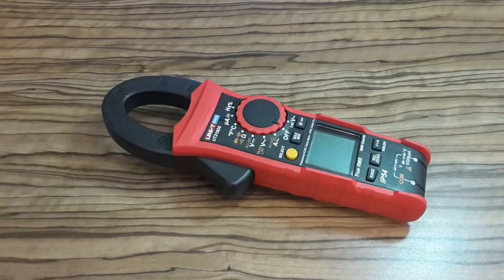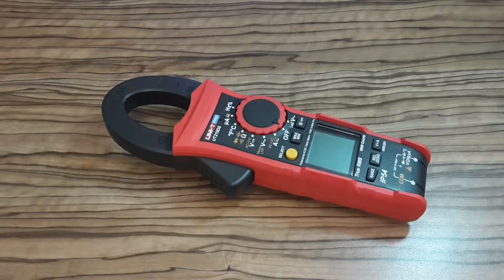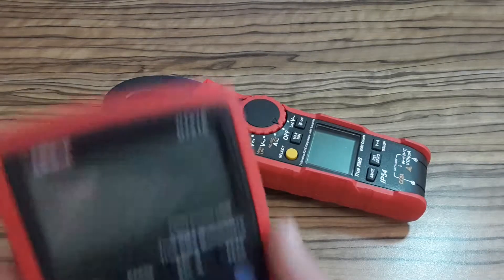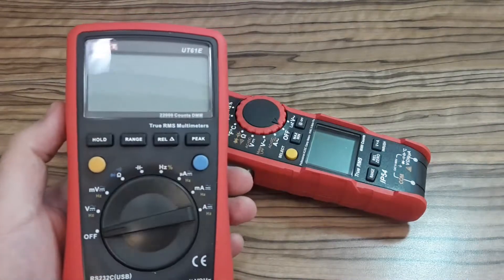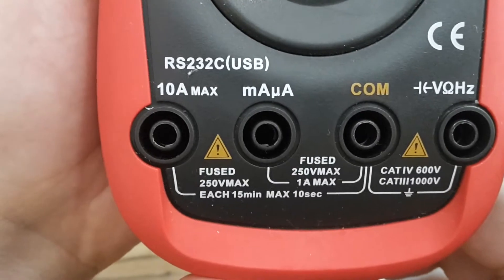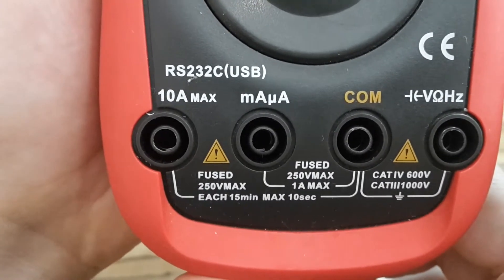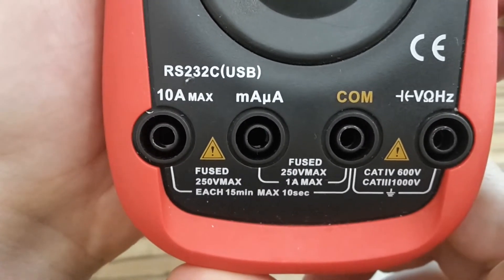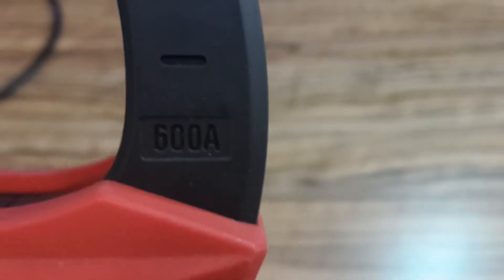I usually use this multimeter for measuring current, but the problem is that this multimeter is only up to 10 amps, which is the maximum. Therefore I decided to buy this clamp meter, which is up to 600.